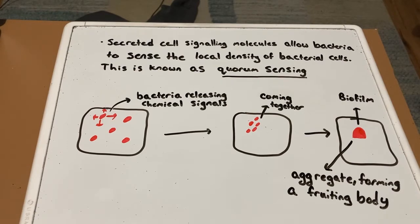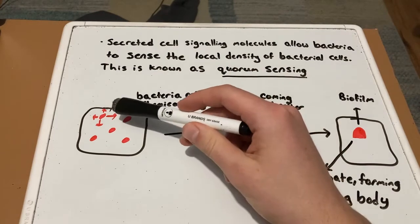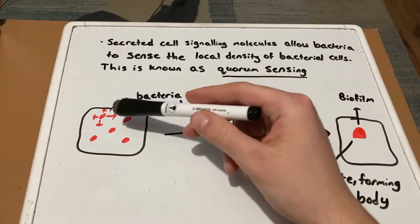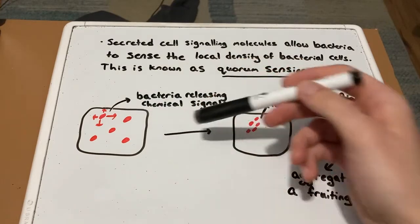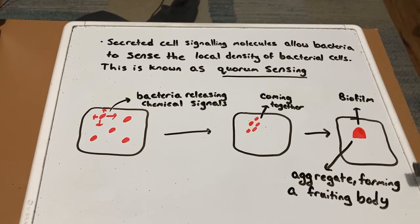Quorum sensing can also help some bacteria survive in harsh conditions. This is done through bacterial cells coming together to form biofilms, which are aggregations of bacteria. These aggregations can then perform specialized functions, such as in Myxococcus xanthus, which is a soil bacteria. When food is scarce, starving cells secrete a molecule sending a message to neighboring cells to aggregate. In response, the cells form a structure known as the fruiting body, which allows the bacteria to survive until conditions improve. You can see this in the diagram — a cell secreting molecules, represented by arrows, slowly forming together into this biofilm, or fruiting body.